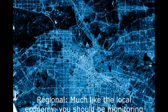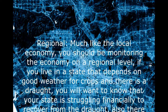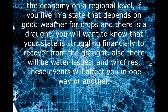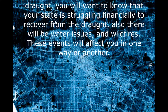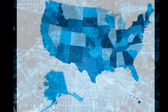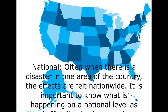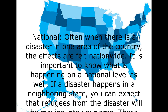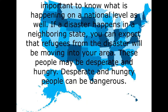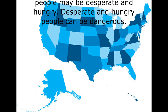Much like the local economy, you should be monitoring the economy on a regional level. If you live in a state that depends on good weather for crops and there's a drought, you will want to know that your state is struggling financially. There will also be water issues and wildfires. Often when there is a disaster in one area of the country, the effects are felt nationwide. If a disaster happens in a neighboring state, you can expect that refugees from that disaster will be moving into your area — these people may be desperate and hungry, and desperate and hungry people can be very dangerous.